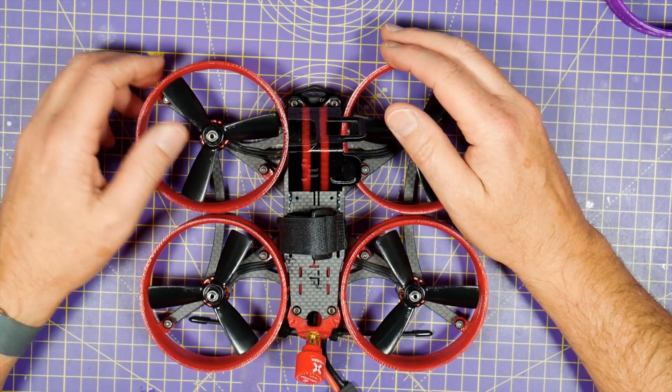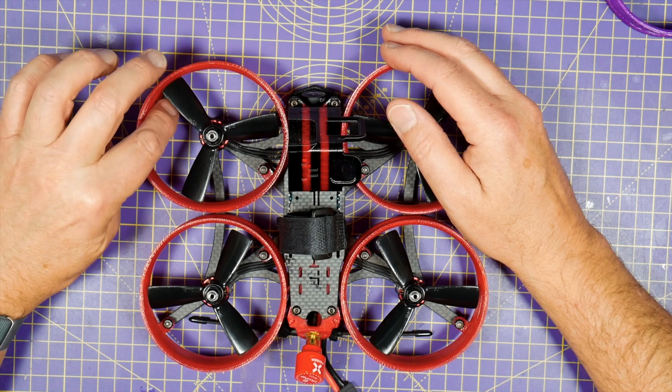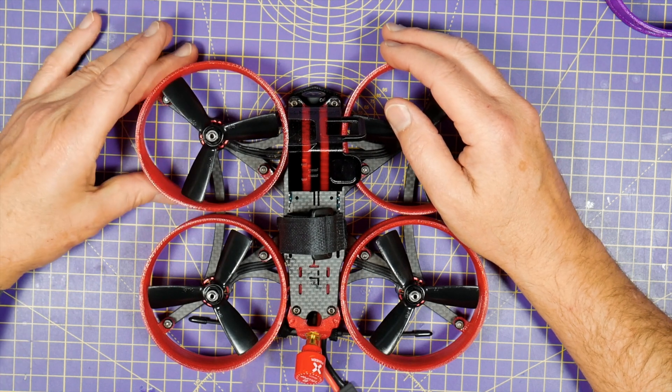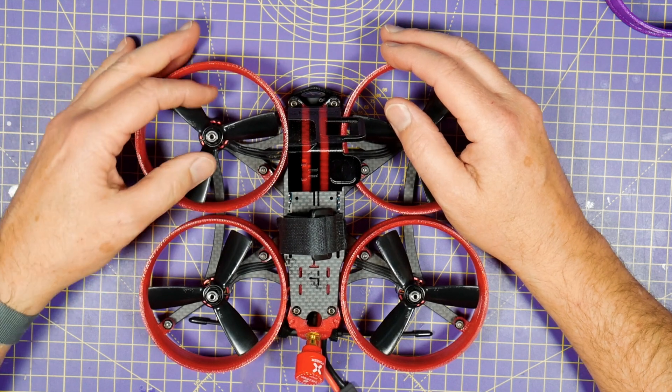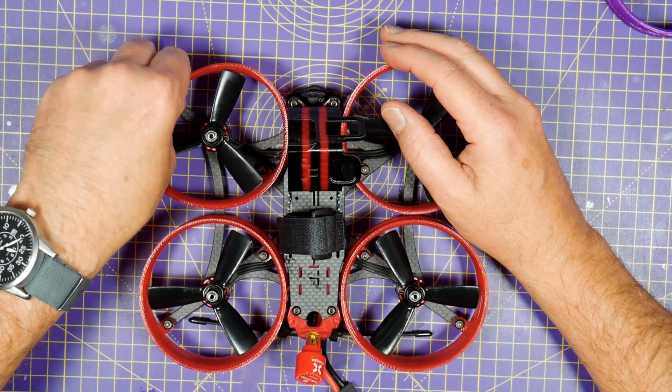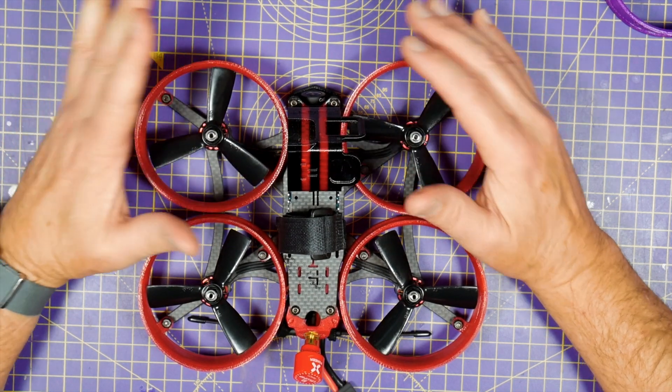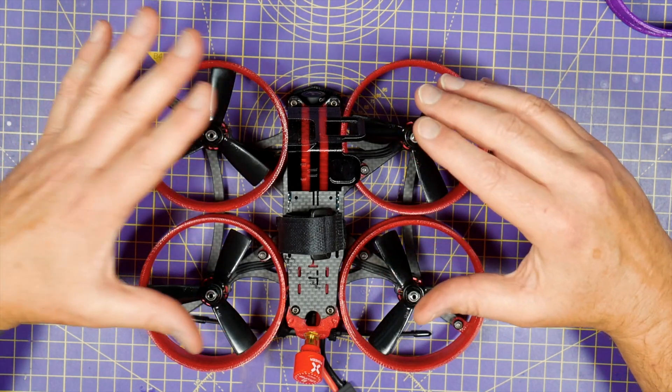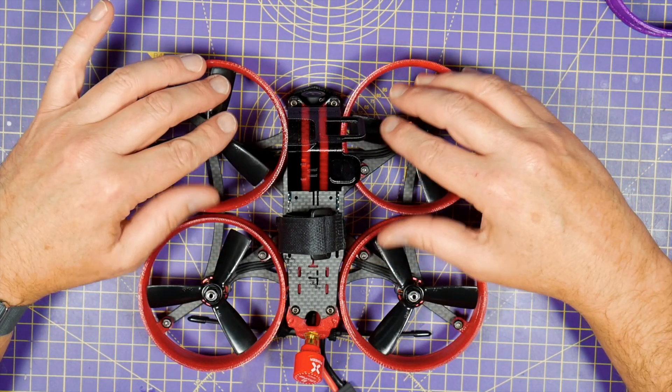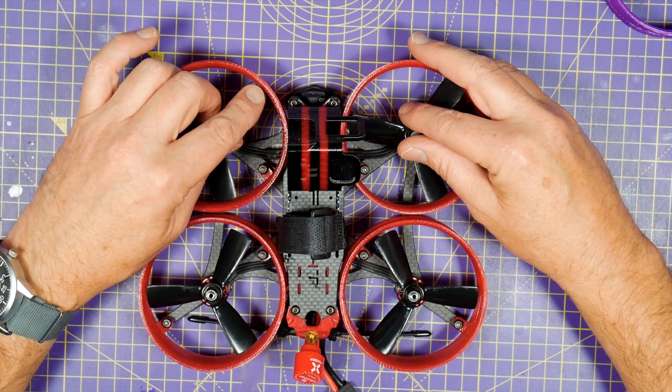When you fit these don't do the bolts up too tight because the ducts will twist and the props will catch. Just keep wiggling them until they don't bind anywhere. Depending on exactly how you print them and your printer settings you may need to sand the edges of your props down just a little bit.